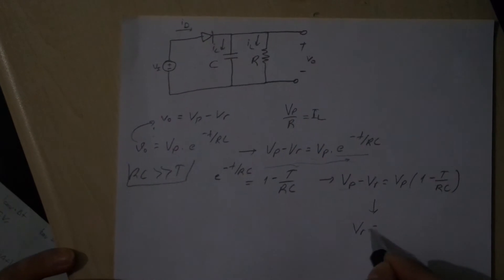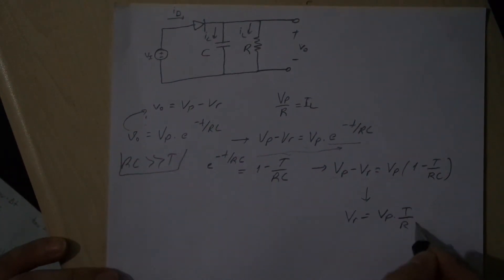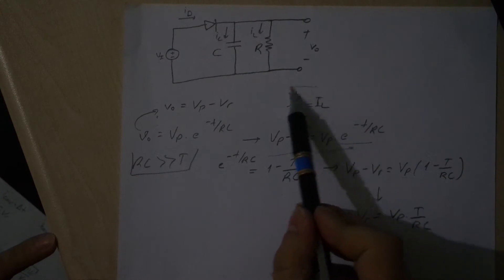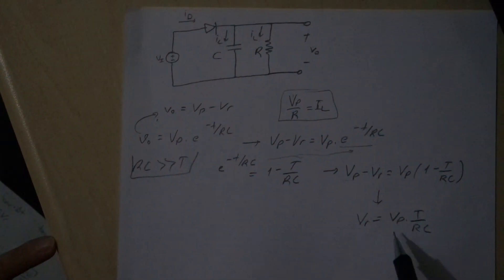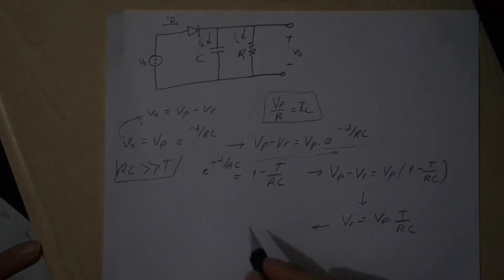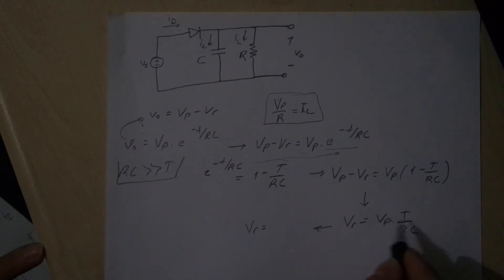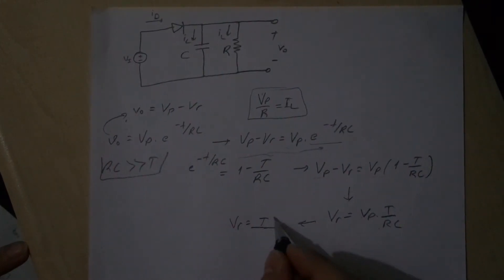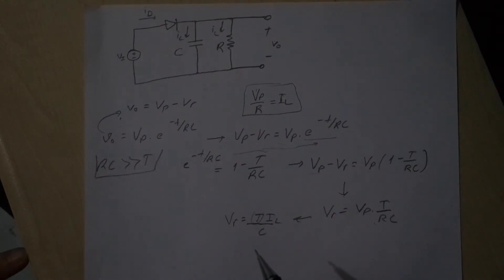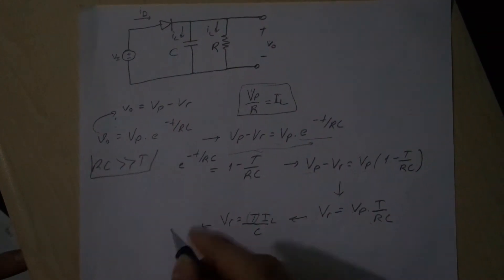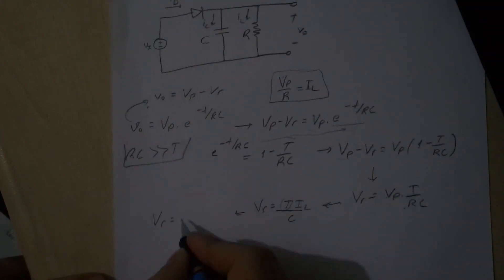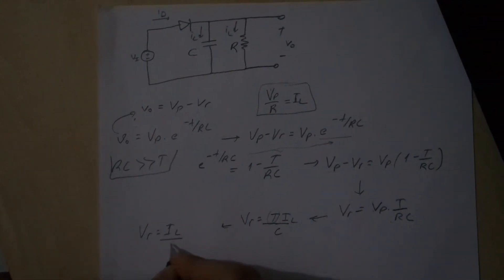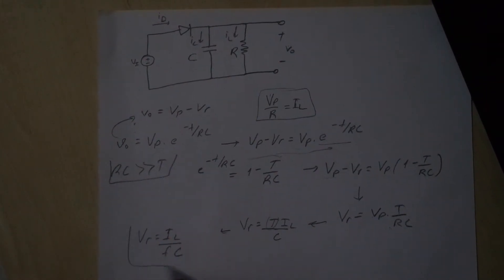After calculation, VR is VP times T over RC. We define IL value as VP over R. Rewriting this, VR is T over RC times VP, so VR equals IL over C. Since T is 1 over frequency, VR equals IL over fC. We have found the VR value.